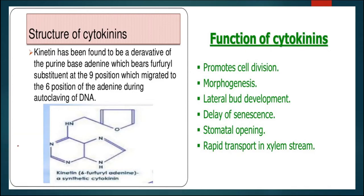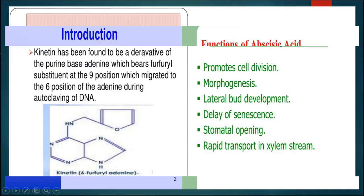Cytokinin is a plant hormone that performs various activities and is known as a growth promoter. Kinetin is found to be a derivative of the purine base adenine, which bears a furfuryl substituent at the ninth position, which migrated to the sixth position of adenine during autoclaving of DNA. Cytokinin helps in cell division, promotes morphogenesis, lateral bud development, delays senescence, is responsible for the opening of stomata, and helps in rapid transport in the xylem stream.